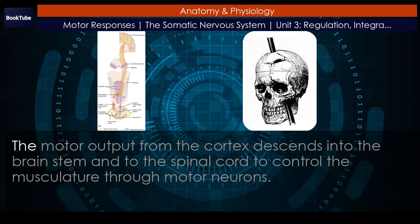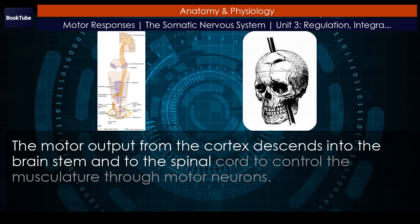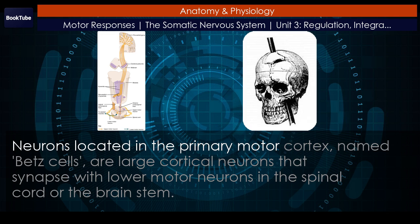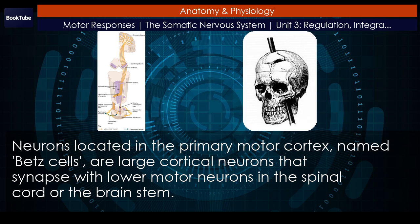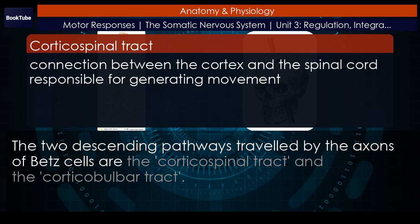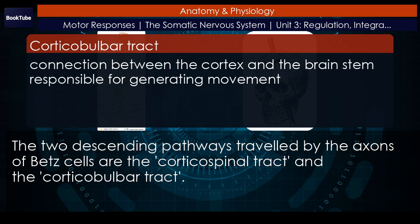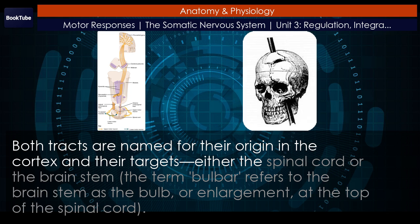The motor output from the cortex descends into the brain stem and to the spinal cord to control the musculature through motor neurons. Neurons located in the primary motor cortex, named Betz cells, are large cortical neurons that synapse with lower motor neurons in the spinal cord or the brain stem. The two descending pathways traveled by the axons of Betz cells are the corticospinal tract and the corticobulbar tract. Both tracts are named for their origin in the cortex and their targets — either the spinal cord or the brain stem. The term bulbar refers to the brain stem as the bulb or enlargement.